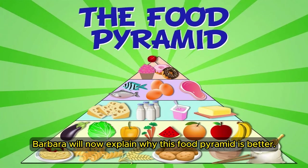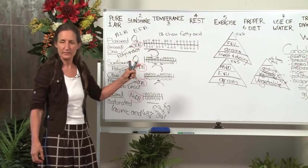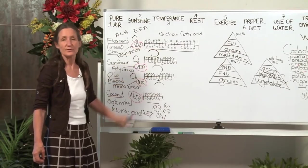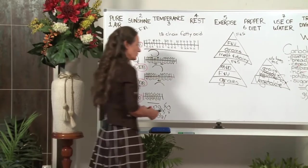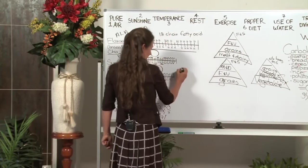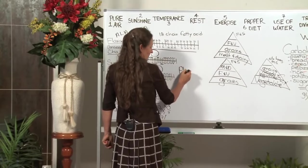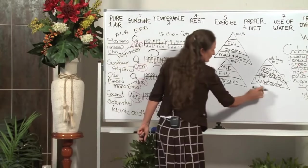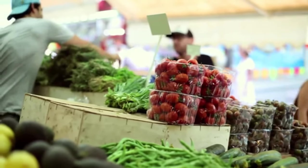Barbara will now explain why this food pyramid is better. Let's have a look at that triangle through a few different windows. Let's look at it through the pH window. Does it get a tick? It does because the most alkaline forming food are your vegetables. So it gets a tick.